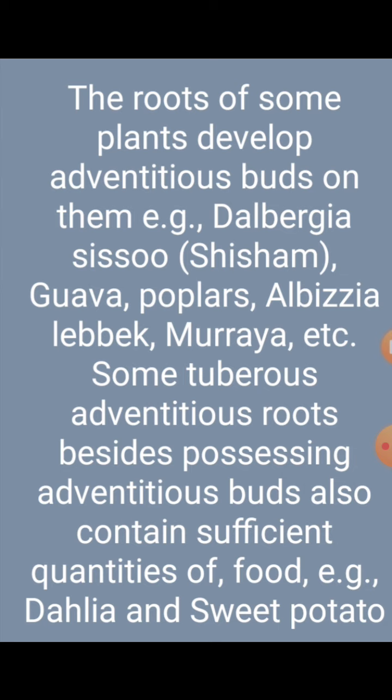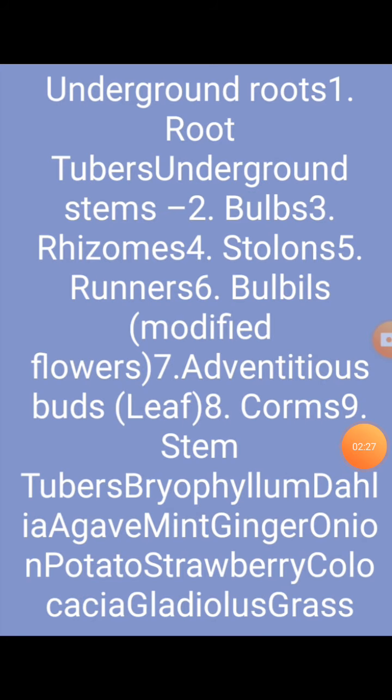Albizia is another example. Some tuberous parts with adventitious buds developed from roots can develop into new plants — for example, Dahlia and sweet potato. Different types of underground root modifications can also develop into new plants. This is called vegetative reproduction by the natural method.